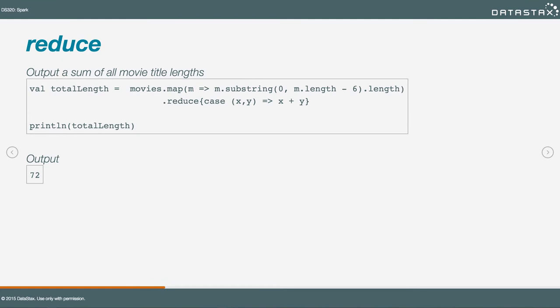That intermediate RDD containing title lengths is an ephemeral thing that comes and goes in the service of our computation. We take that RDD and call the reduce method on it. Reduce expects a function with two parameters — we're calling them X and Y — and what we do is add them. Those will be the length values of two separate elements of the input RDD, or an element and an intermediate computation. The framework handles that. We're just saying apply this function over and over, and we get the number 72 as a result.